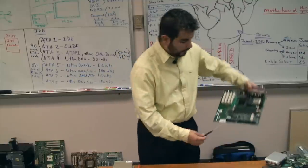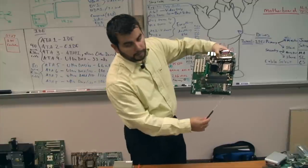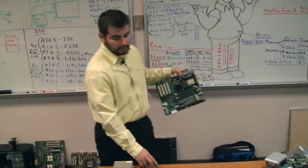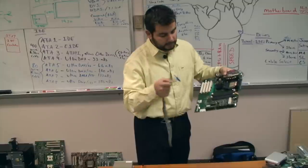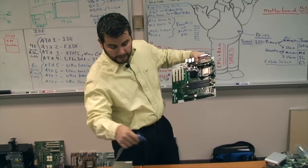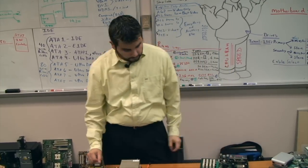All right, so we had our two IDE connections there. Right next to that we have another connection, another parallel ribbon cable connection. It looks like an IDE but it's a little bit smaller. Did anybody try to plug in your IDE cable to it? It didn't fit because the IDE cable is too big. That is for your floppy.